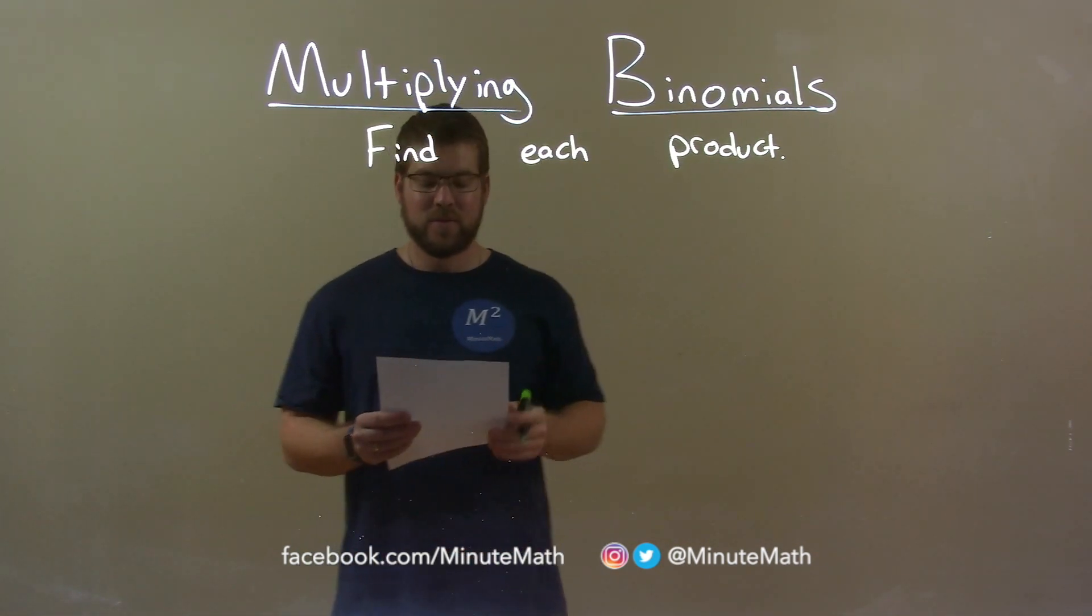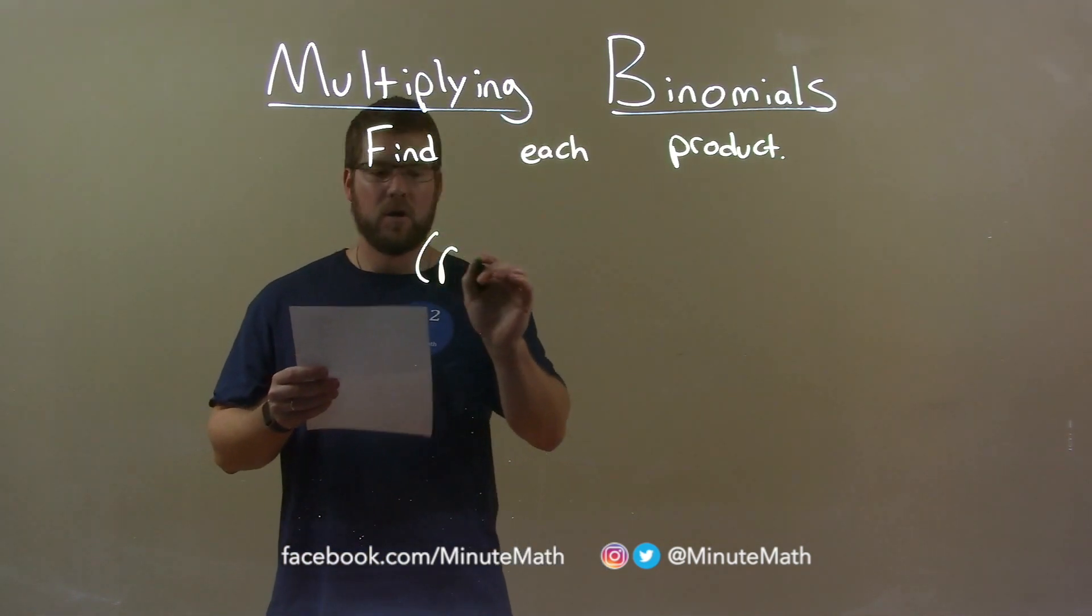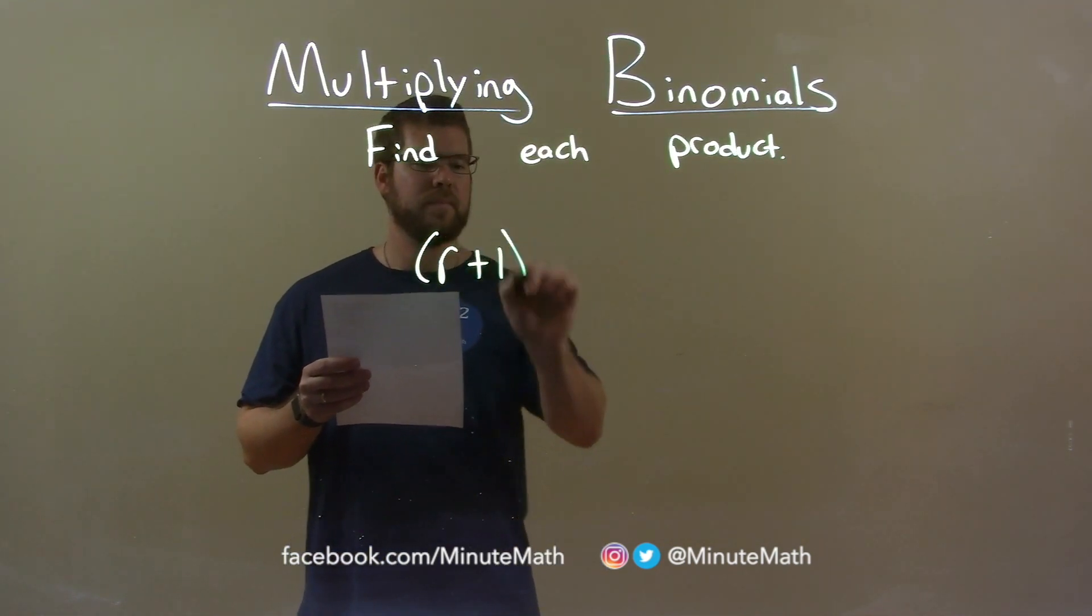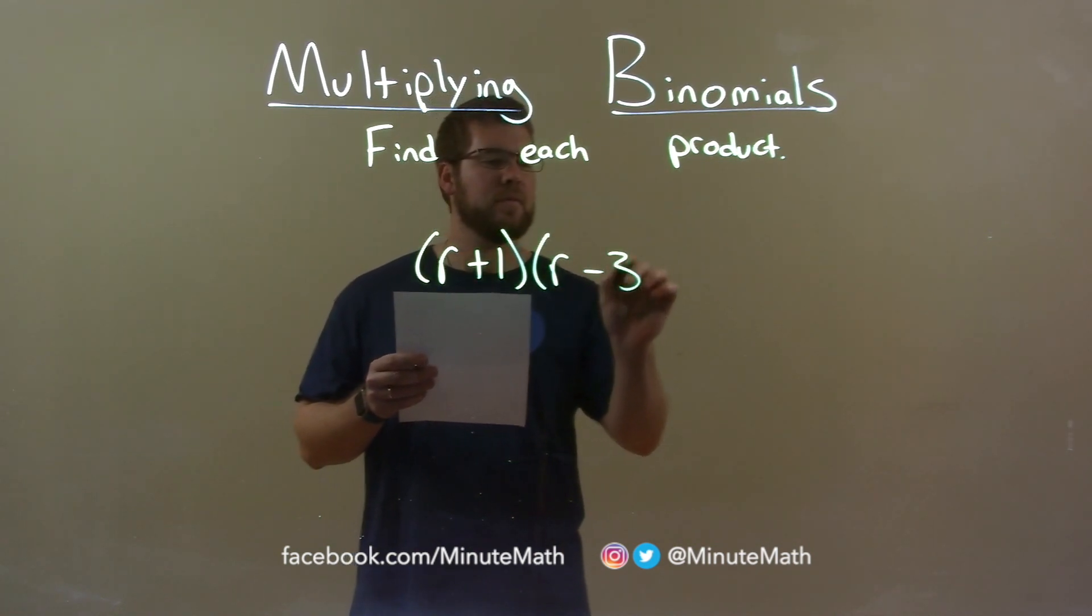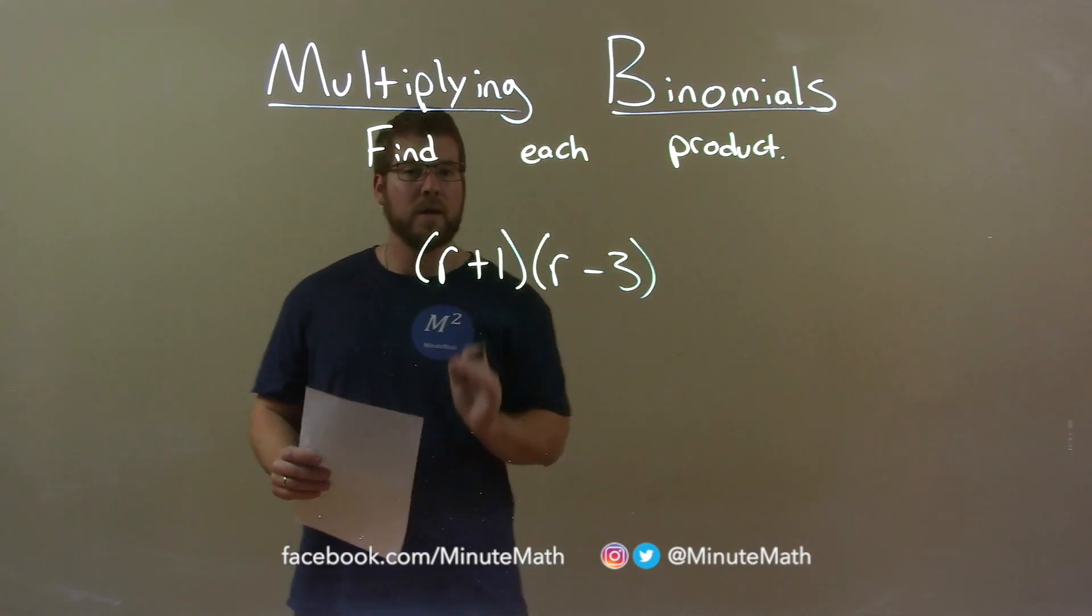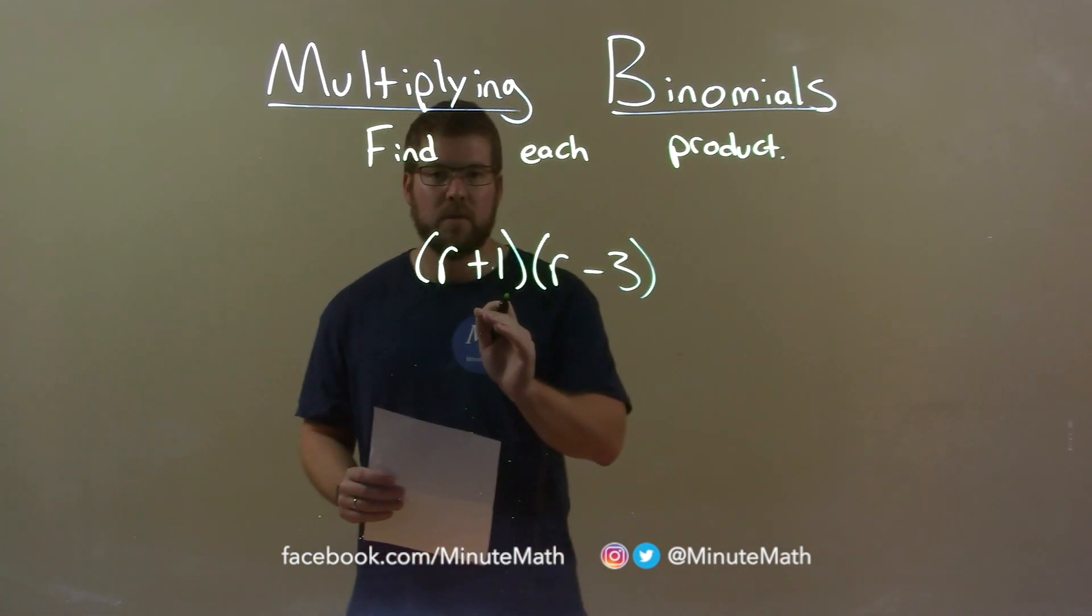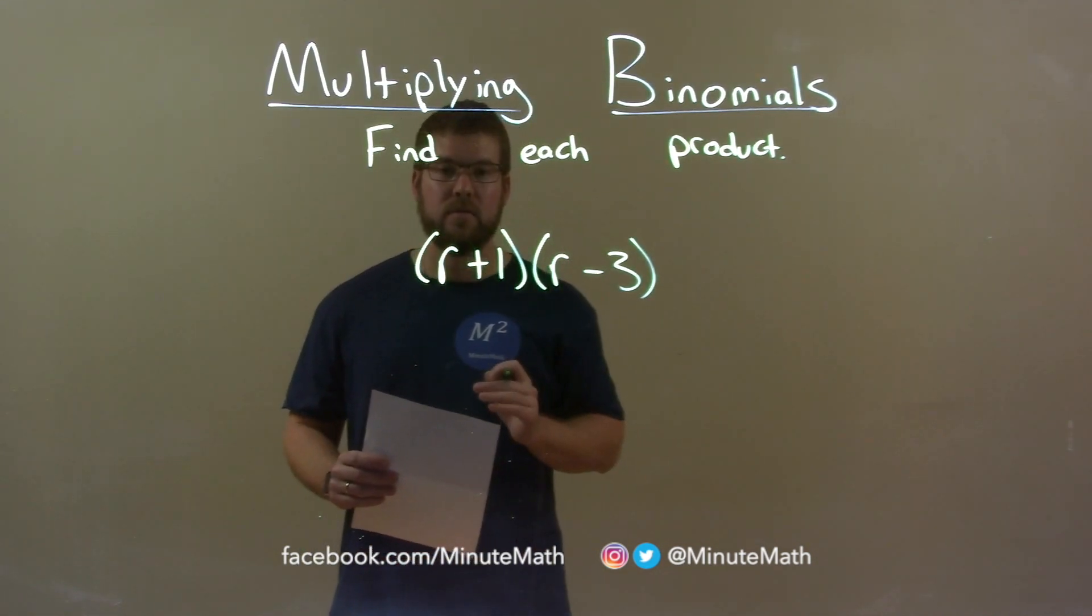So if I was given this product, r plus 1 times r minus 3, we want to take all parts of our first parenthesis and multiply it by all parts of our second parenthesis.